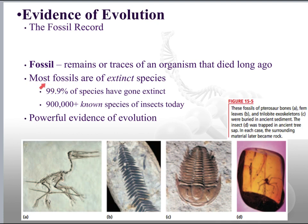An important thing to realize is that most fossils are of extinct species. That makes sense. But 99.9% of all species that have ever lived are extinct. That means right now, only about one out of every 1,000 or so has survived to this point, which means a lot of them historically have died off.